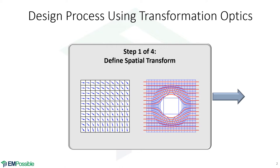Step one of this process is to define some kind of spatial transform that tells you how we're going to flow waves or how we're going to bend fields. On the left here, I'm showing maybe we want to flow waves along a 90 degree bend. That's a perfectly valid input to transformation optics.